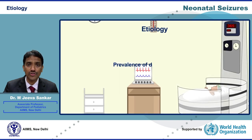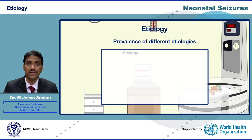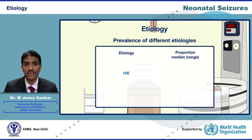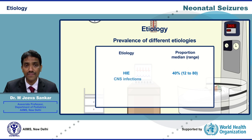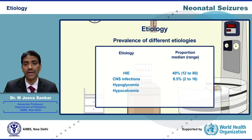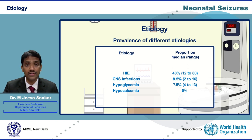Looking at the prevalence of different etiologies, hypoxic ischemic encephalopathy is the most common etiology, accounting for almost 40% of all seizure episodes. CNS infections like meningitis contribute about 9%, while metabolic disturbances like hypoglycemia and hypocalcemia contribute around 7.5% and 5% respectively. However, this proportion might vary depending upon the patient population in a given unit.